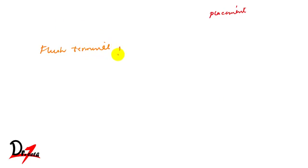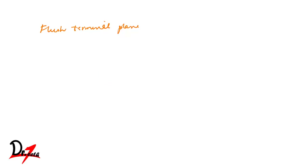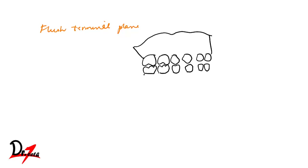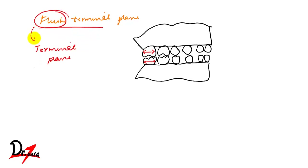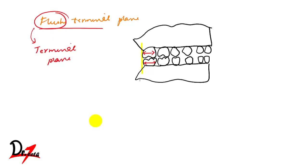Now let's look at the flush terminal plane. The terminal plane refers to the mesiodistal relationship between the upper and lower second deciduous molar. In the flush terminal plane, the distal surface of the upper and lower second deciduous molar are in the same vertical plane — that is a normal feature.